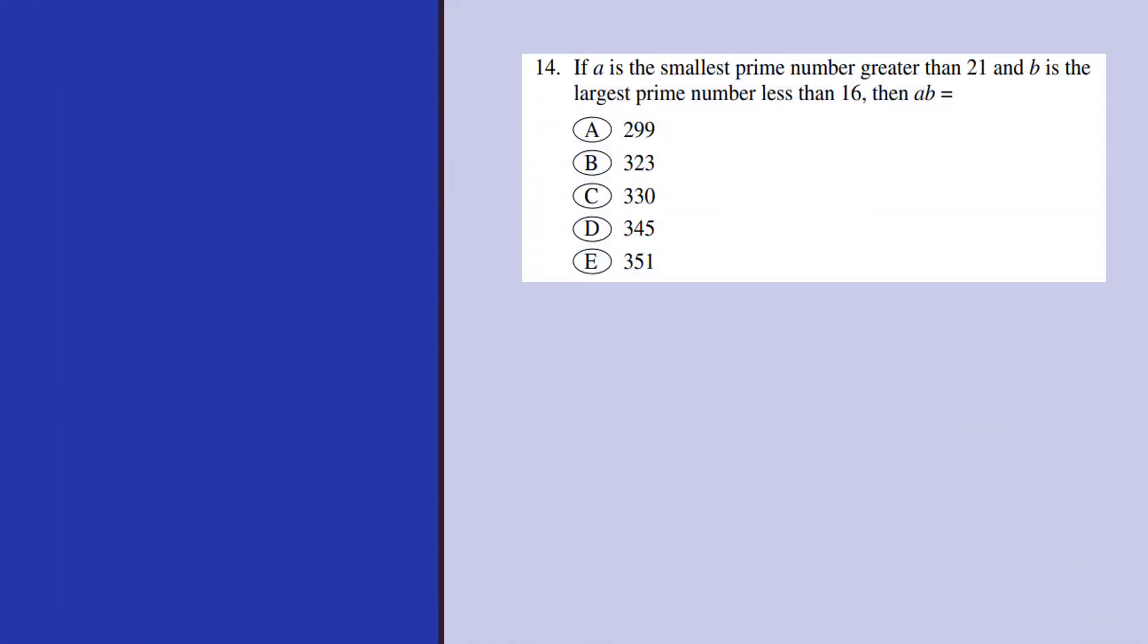If A is the smallest prime number greater than 21 and B is the largest prime number less than 16, then we need to find the product AB.